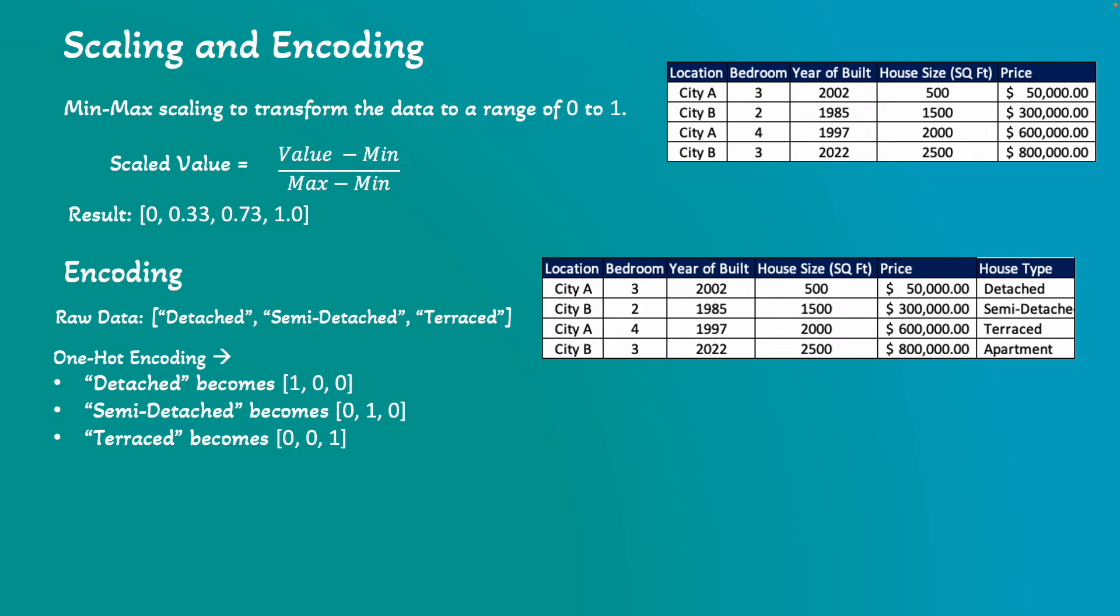One-hot encoding is one of the techniques that we can apply on top of the raw data to convert the house types to binary vector. As an example, detached will turn to 1,0,0, semi-detached as 0,1,0, and terraced to 0,0,1. You can consider these vectors as coordinates or data points in a 3D diagram.